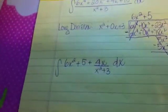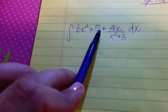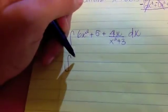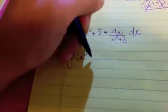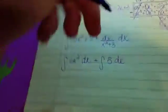All right, so now we can go ahead and separate the three terms into three separate integrals. So we'll have the integral of 6x squared with respect to x plus the integral of 5 with respect to x.